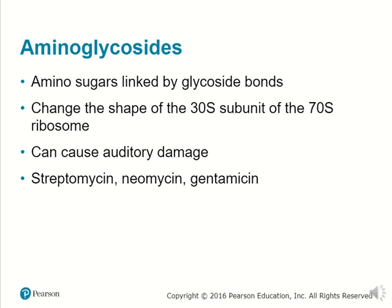Aminoglycosides are amino sugars linked by a glycoside bond. They change the shape of the 30S subunit of the 70S ribosome and can, sadly, cause auditory damage. They also exist as streptomycin, neomycin, and gentamicin.